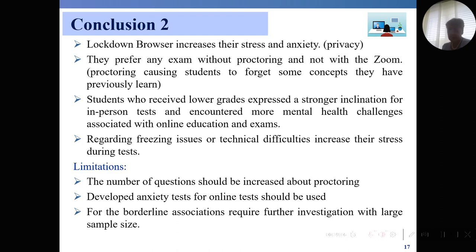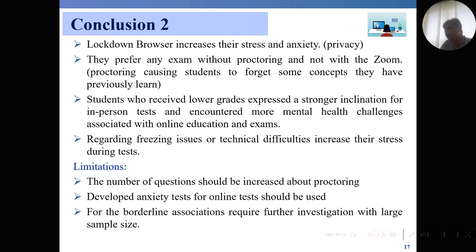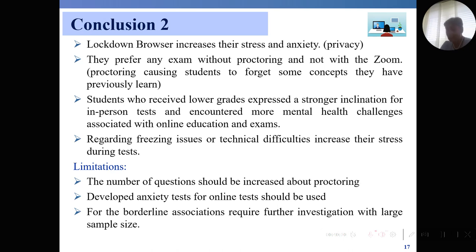We have some limitations for this research. The number of questions should be increased about proctoring. Also, developed anxiety tests should be used for students — we only prepared some questions based on our previous research, but if we use validated anxiety tests, we can measure their anxiety level more correctly. For borderline associations, further investigation with a larger sample size is required. We had only 313 volunteer participants, and this should be more; we would need permissions from our school to apply this to all students.